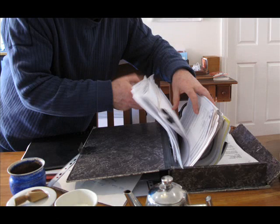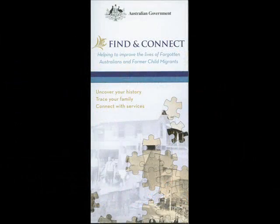Next, the where. The Forgotten Australians report recommends that support and counselling services be available at the time of release and after as required, and be available from an independent source if the care leaver does not wish to access those services provided by the former care provider. As part of the Find and Connect program, FACSEA has funded a national network of support services to assist care leavers in locating and accessing records. These independent services can help those who are in out-of-home care locate personal records, access personalised support, connect with other support networks, and reconnect with family where possible.